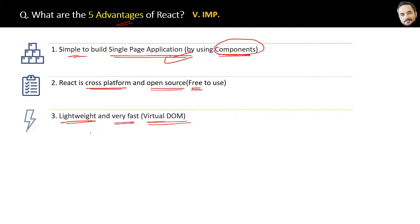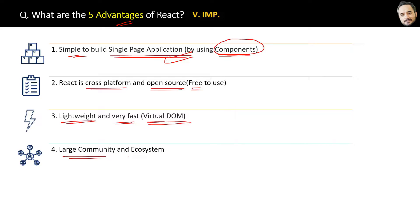The fourth benefit is that React is supported by a very large community and ecosystem. There are many forums where you can discuss your coding problems. Since React is the most popular UI development technology right now, it also has the maximum number of jobs in the market — and of course, you don't have to say this in the interview, but this is the most important point for us.